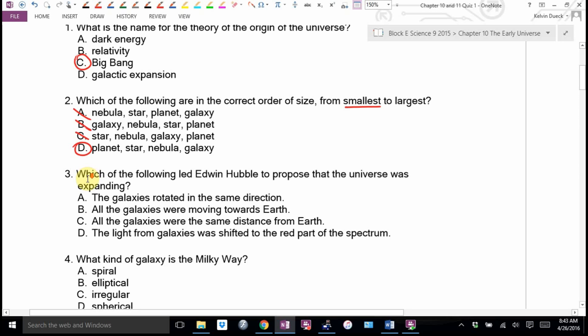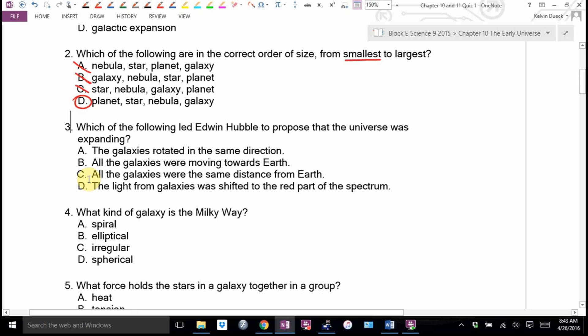Which of the following led Edwin Hubble to propose that the universe was expanding? Cole, I know you can read from here. A, the galaxies rotated in the same direction. B, the galaxies were moving towards Earth. C, all the galaxies were the same distance from Earth. D, the light from galaxies was shifted to the red part of the spectrum. What's the correct answer here, my friend? I agree. D.